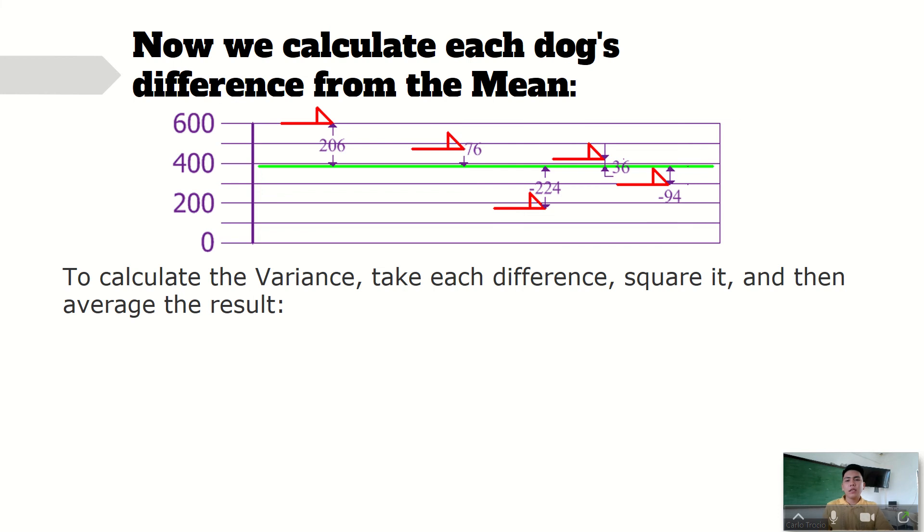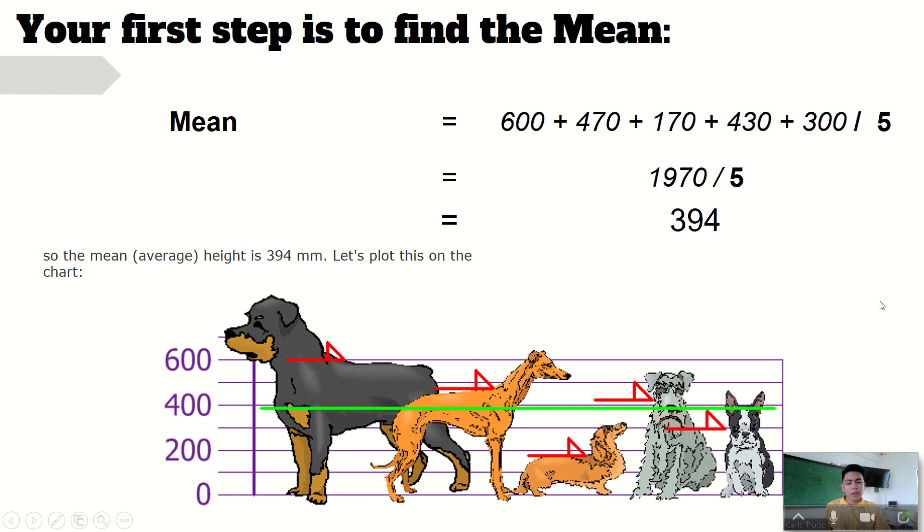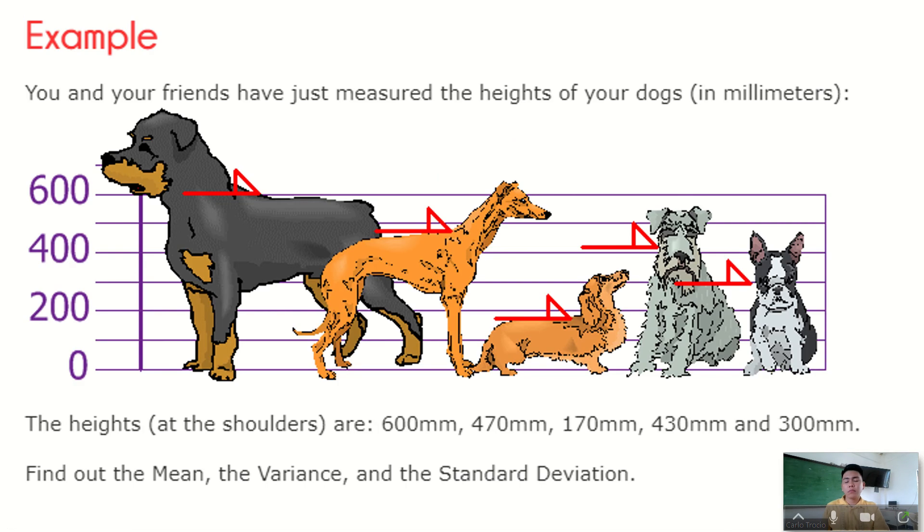Next, we need to find the variance. In finding the variance, we need to take each difference. We need to consider the height, for example 600 mm. This is the first data compared to the mean.